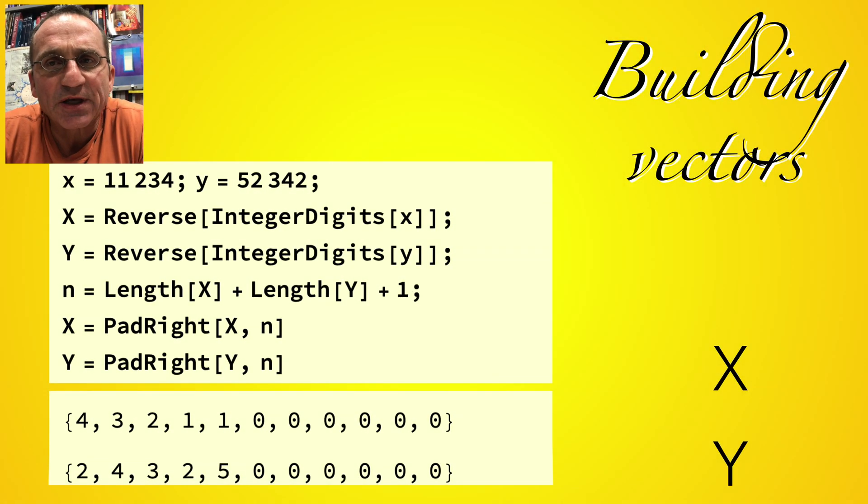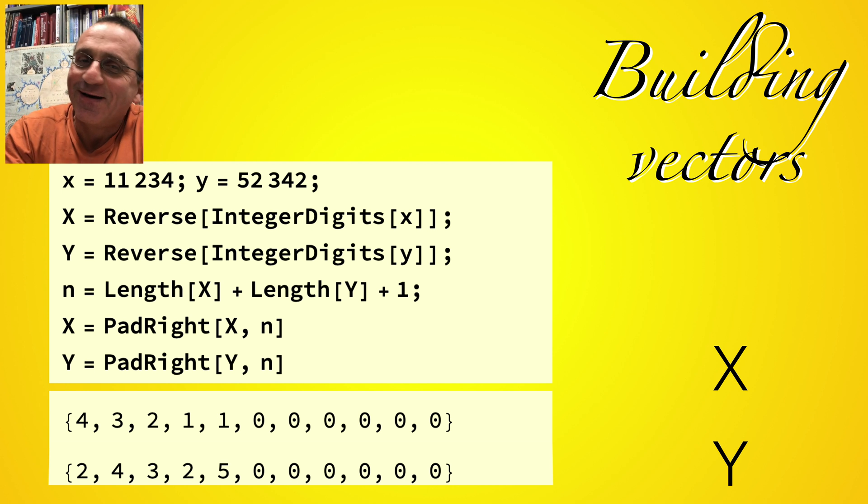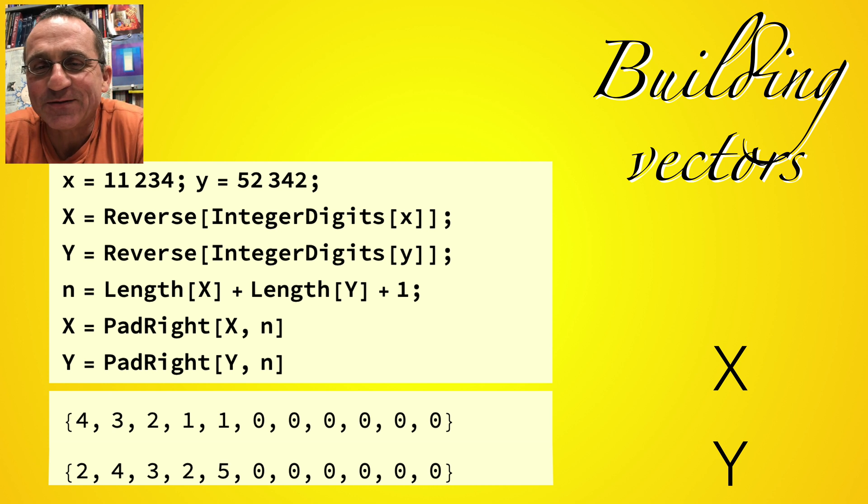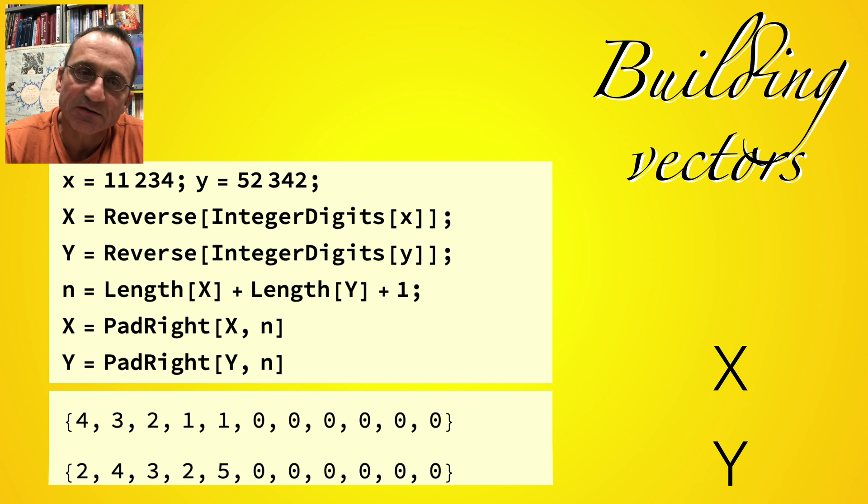But let's go back to the story of multiplication. So we first build the vectors X and Y, capital X and capital Y, which have these integer digits. We have to reverse them because we start reading from the right and not from the left when we are writing down numbers, and we also pad the vectors so that it fits afterwards in the product. So in this case we have 11 dimensional space where the number 4321100 that's the first vector and 24325 that implements the second number, the second digit.